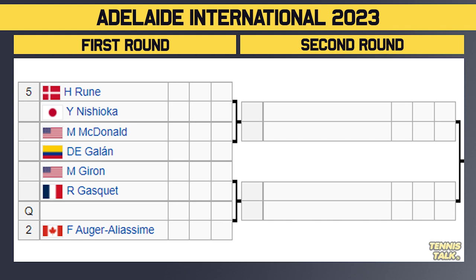In the bottom section of the draw, Runa, the number five seed, takes on Nishioka in the first round — a matchup they've never had before. It'll be interesting to see how Runa does after such a successful end to last season. The number two seed Felix Auger-Aliassime gets a qualifier in the first round. Runa and FAA could meet in the quarterfinals, and either could face Sinner or Rublev in the semifinals if all the seeds progress.